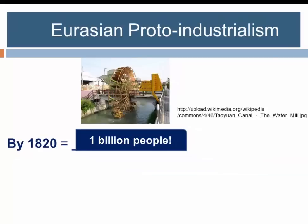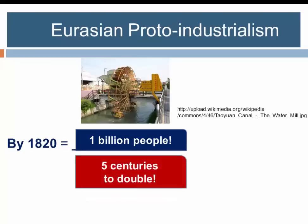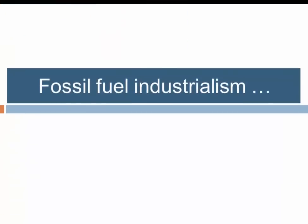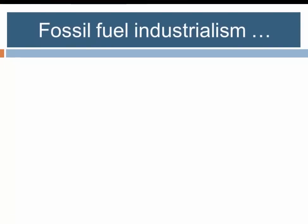As this period was coming to an end around 1800, the human population reached 1 billion for the first time — estimates place this around the year 1820. Given that there were roughly 500 million people around 1300, it took about five centuries for the human population to expand from half a billion to a billion people.